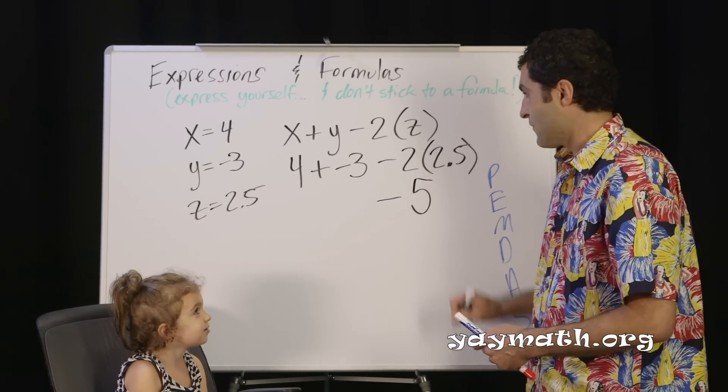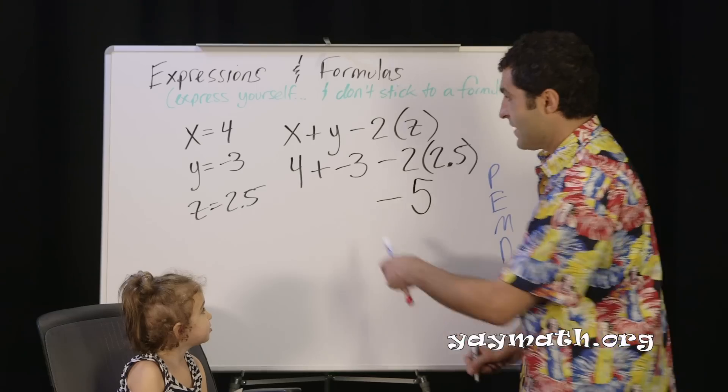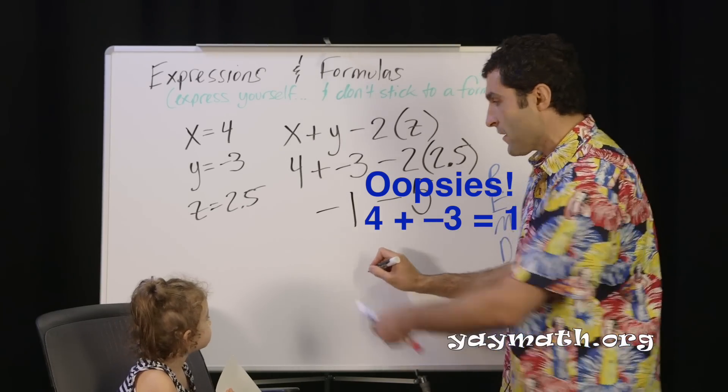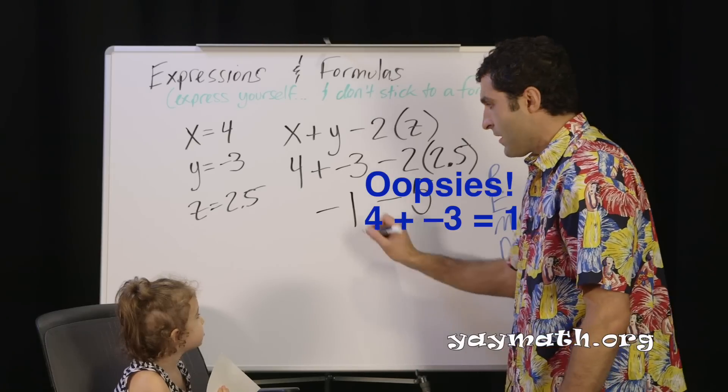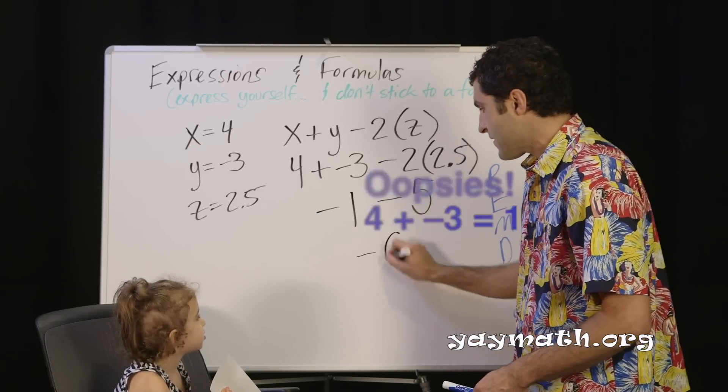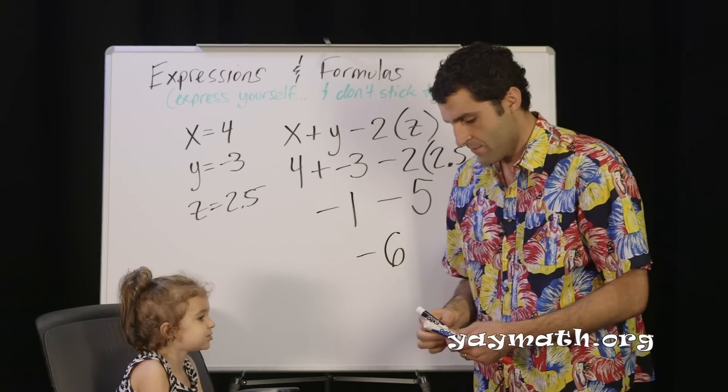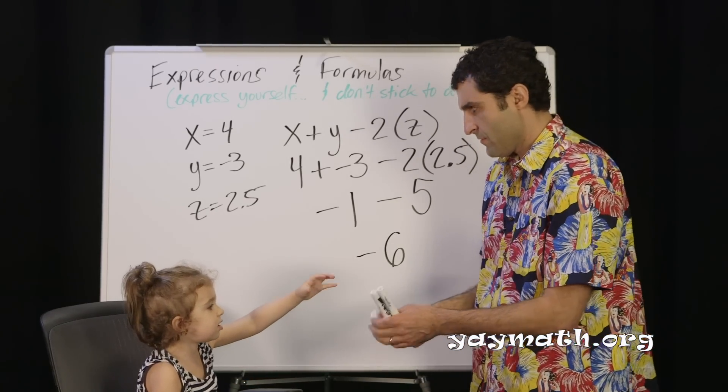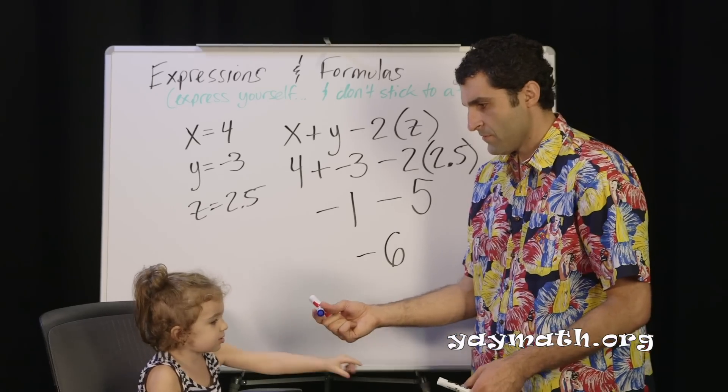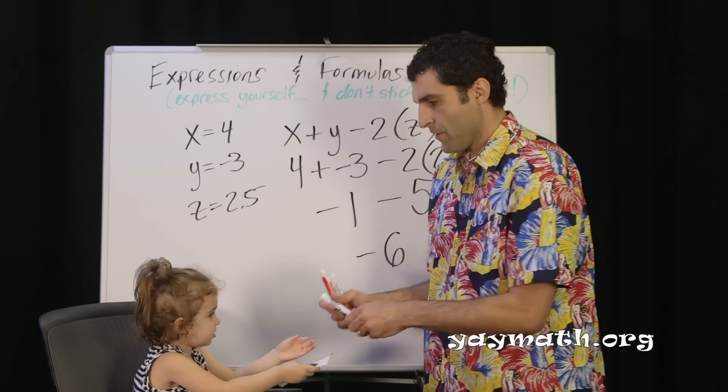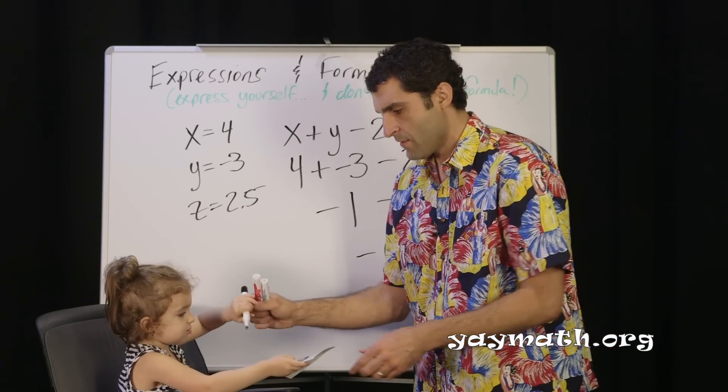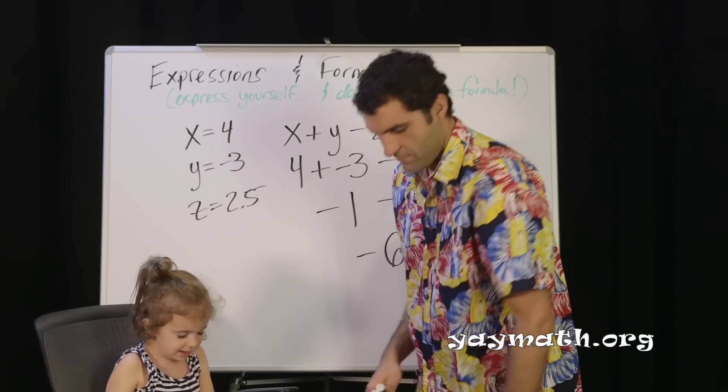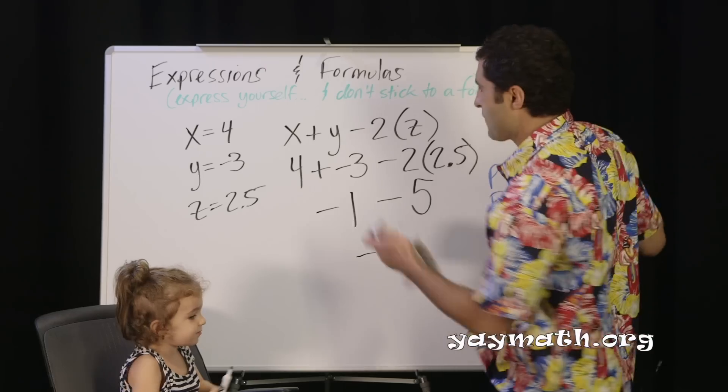Then we do 4 plus negative 3 results in negative 1. Do you want to do it together? I can give you a marker. Once you add these up, down 1 down 5 together makes down 6. I want to do it together. All right, you'll actually help me do this next part. I'll put this here for you. You're doing great. Let's try some different problems.